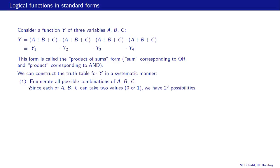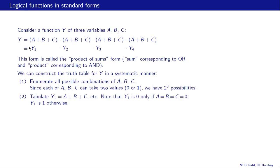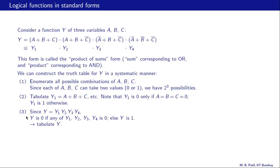Step one: enumerate all possible combinations of a, b, c. Step two: tabulate each sum term. For Y1 = a+b+c, it is 0 only if each of a, b, and c is 0 — all three must be zero. Tabulate Y2, Y3, Y4 similarly. Finally, since Y is the AND of Y1 through Y4, Y is 0 if any of them is 0, and 1 otherwise.